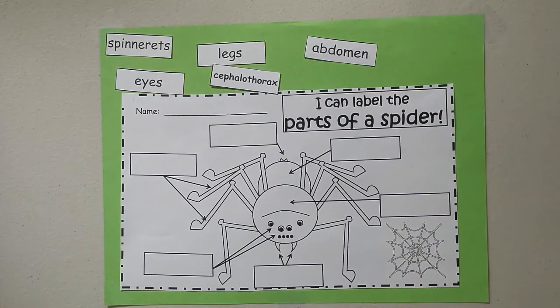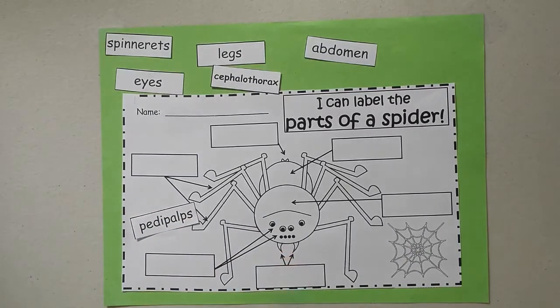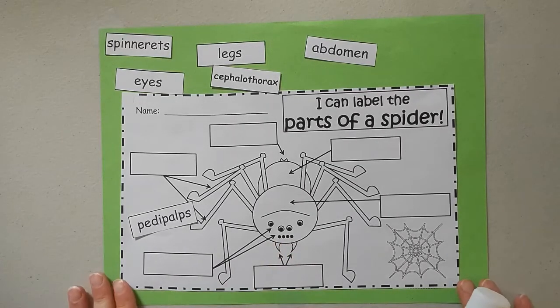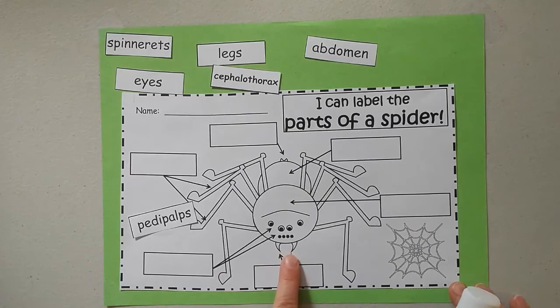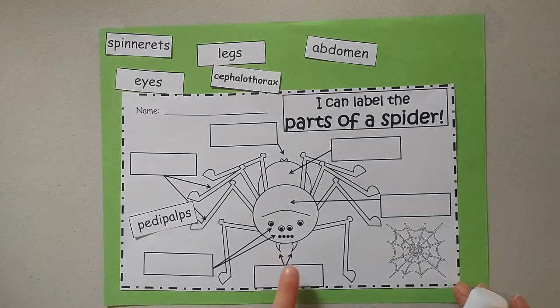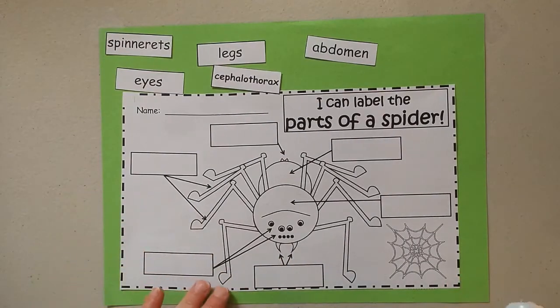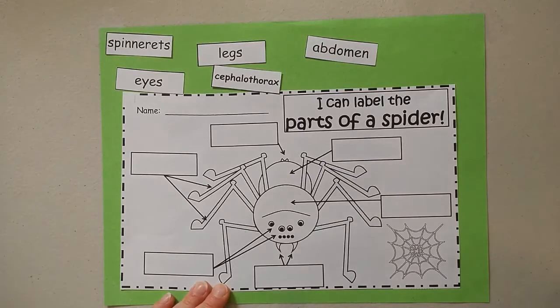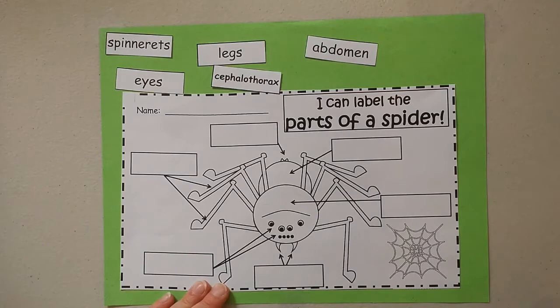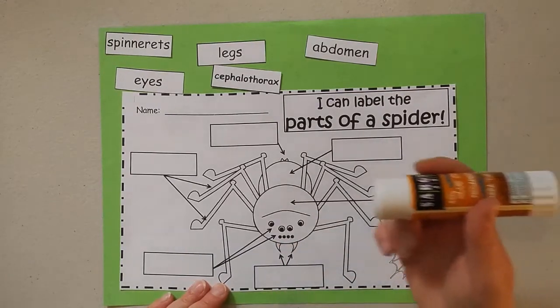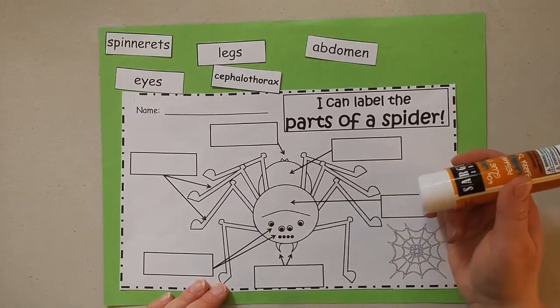We're gonna start here at the front of the spider. Right up here by the mouth is the pedipalps. Remember we talked about that in the book. These pedipalps are feelers that help the spider know what is in right in front of it and feel its food and what's going on.